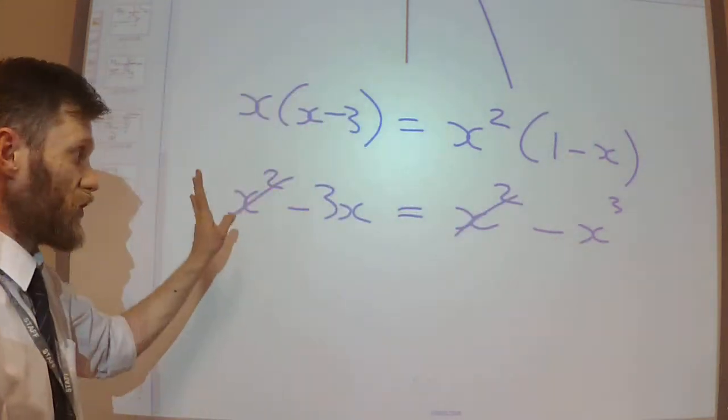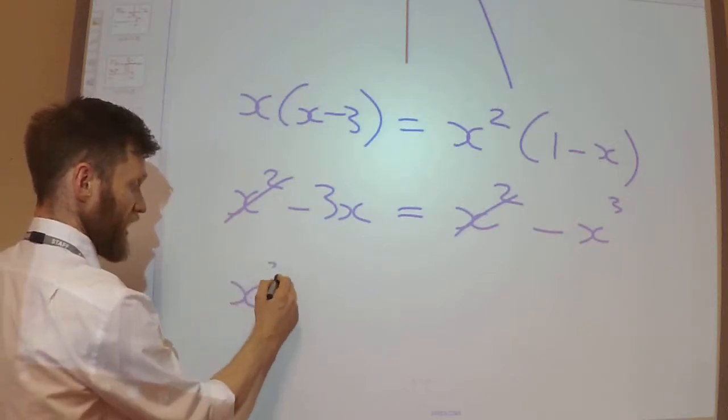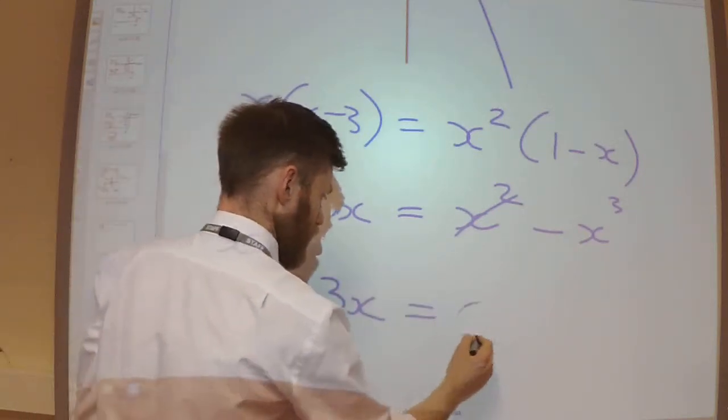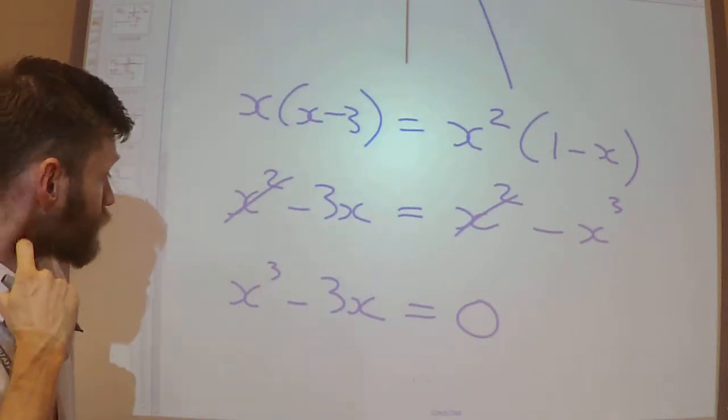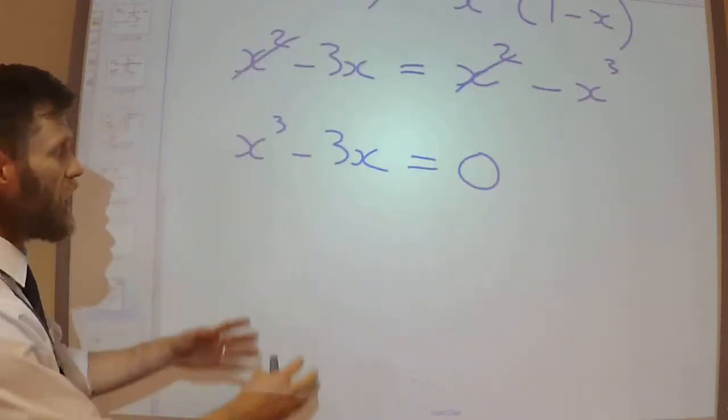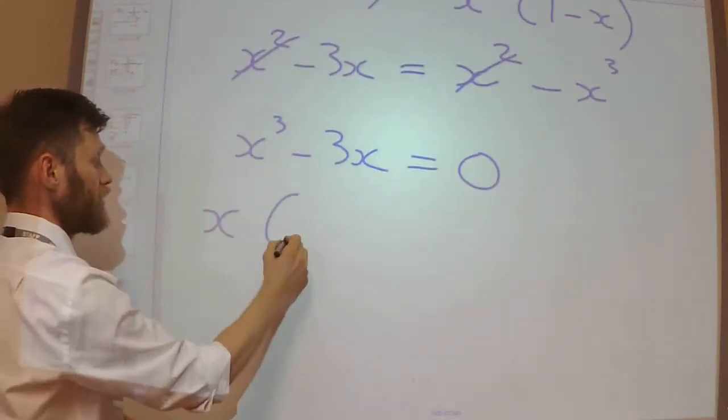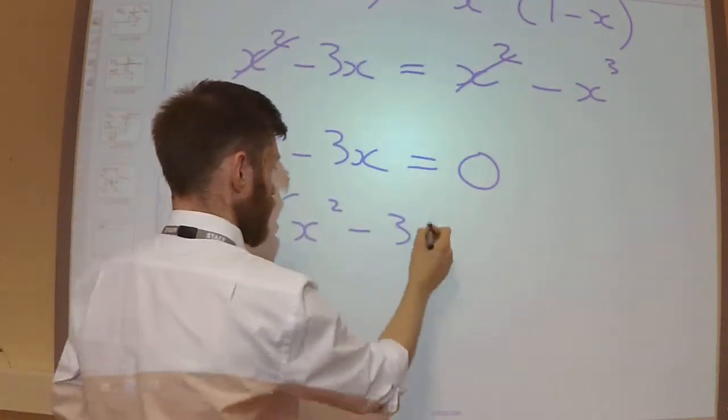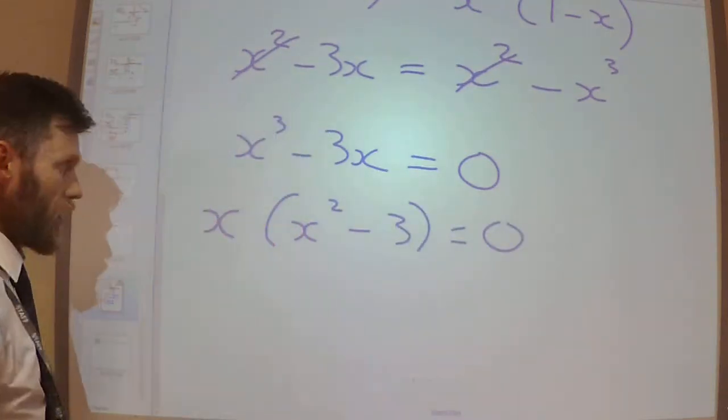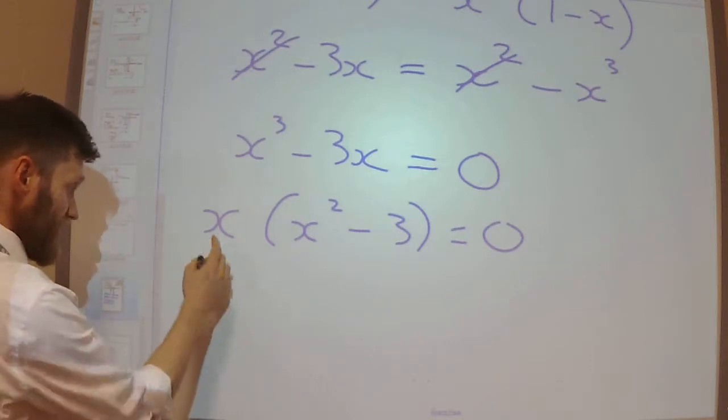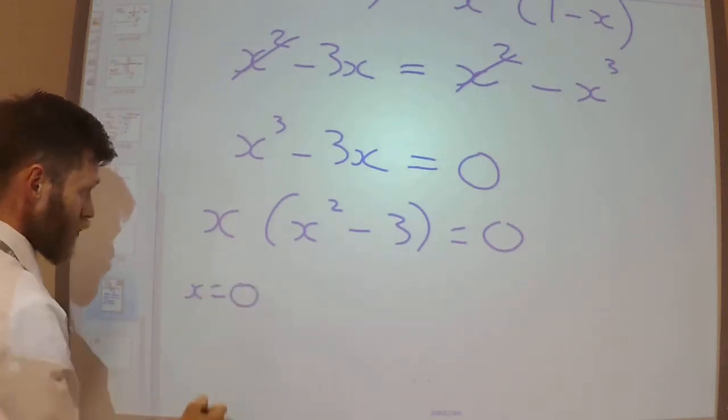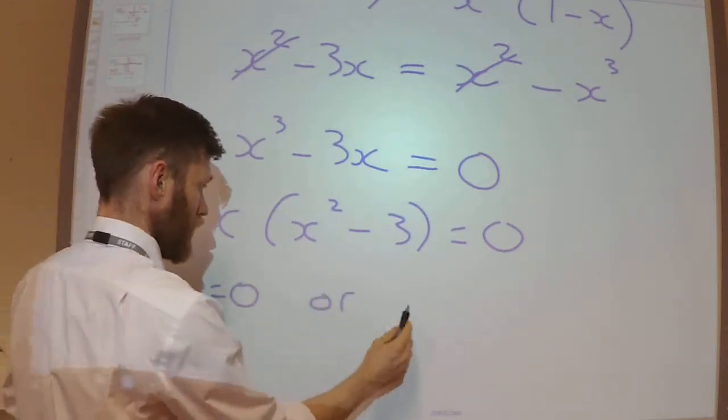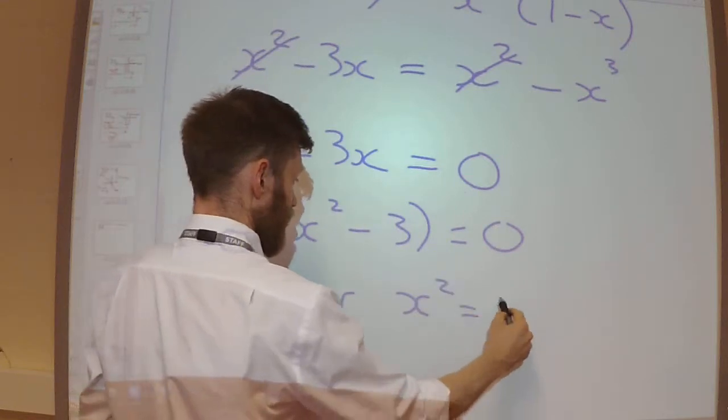Now the x² is going to cancel from both sides. Let's bring the x³ over to the left-hand side so it becomes positive. I can factorize this. And so I know that either x = 0 or x² = 3.